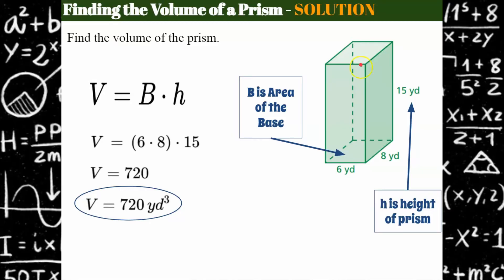Whereas surface area is the amount of material to make the box. The surface area would be the area of all six faces added together — that's the outside, what makes the box. So maybe you want to know how much cardboard you need to make the cereal box. Volume tells you how much cereal the box can hold.